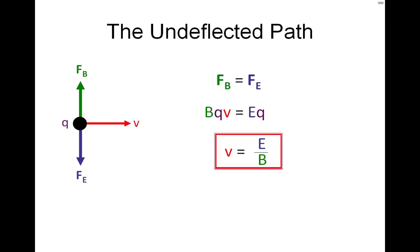we have the velocity of the particle equals E over B, the ratio of the electric field strength and the magnetic flux density. Notice the charge is unimportant. It doesn't matter whether it's a positive or negative charge or the magnitude. The only thing that is important in this case is the velocity.